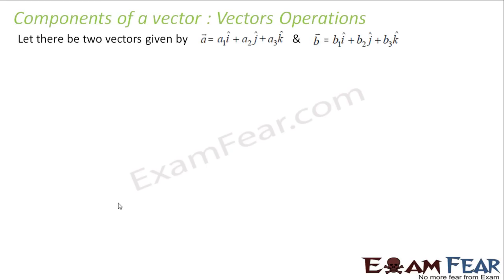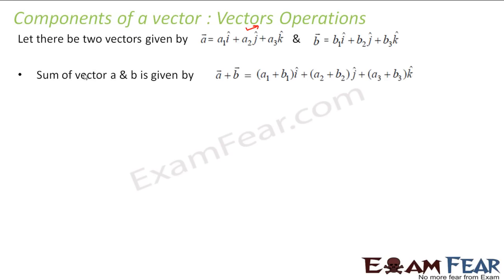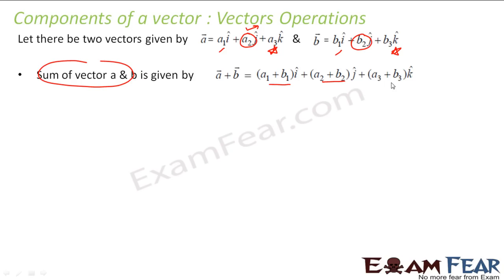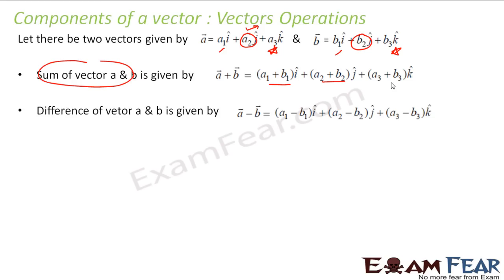If I have two vectors: vector a is a1·î + a2·ĵ + a3·k̂, and vector b is b1·î + b2·ĵ + b3·k̂. If you want to find the sum of these vectors, you add the î components — a1 + b1·î — then add the ĵ components — a2 + b2·ĵ — and add the k̂ components — a3 + b3·k̂. That's the sum of these vectors.